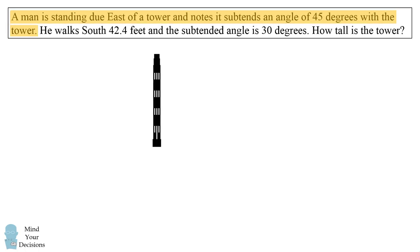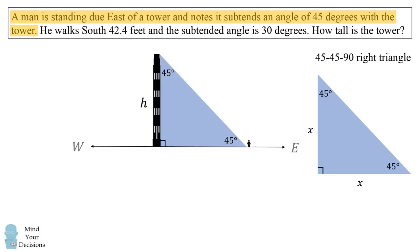So the man is standing east of the tower and he subtends a 45-degree angle with the tower. So we'll assume that the tower is perpendicular to the ground and we have an angle of 45 degrees from the man. This creates an isosceles right triangle, a 45-45-90 right triangle. So if the tower's height is h, we can then use the property of this right triangle to get that the other leg of the tower will also be h. So the distance from the man to the tower is also the same length as the height of the tower.